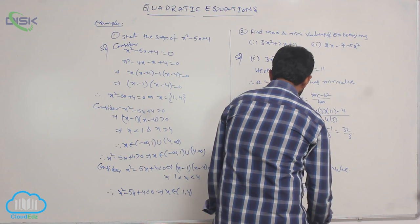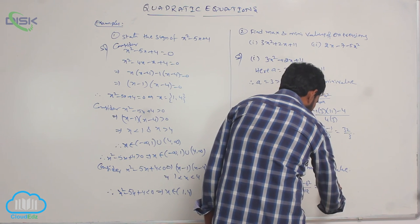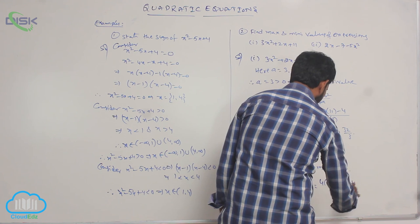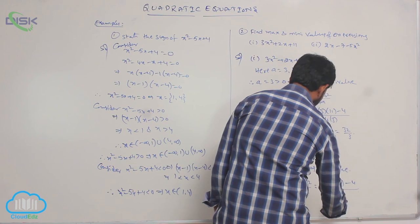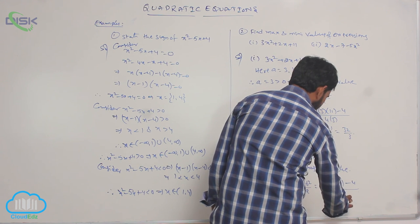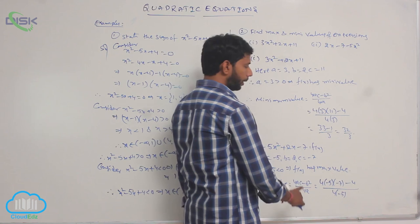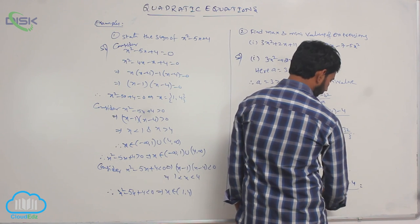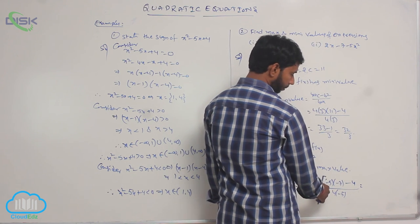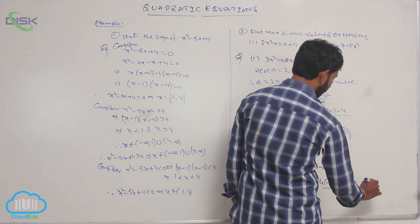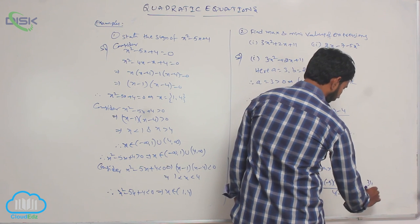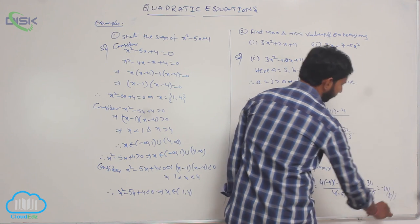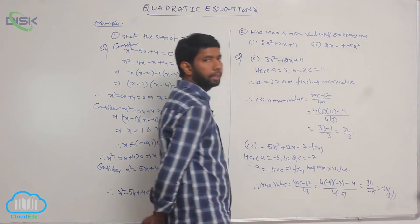Substituting a = -5, c = -7, b = 2: that is (4 × (-5) × (-7) - 4) / (4 × (-5)). The 4 in numerator and denominator cancels, giving (140 - 4) / (-20) = 34 / (-5) = -34/5. The maximum value is -34/5.